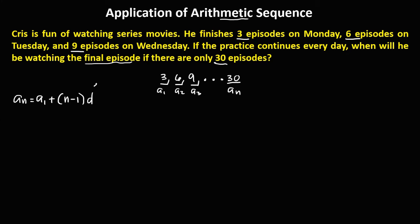We need to solve first for the common difference d, using the formula a sub two minus a sub one — the difference between two consecutive terms. So a sub two is six, minus a sub one which is three. Therefore, the common difference d is positive three.